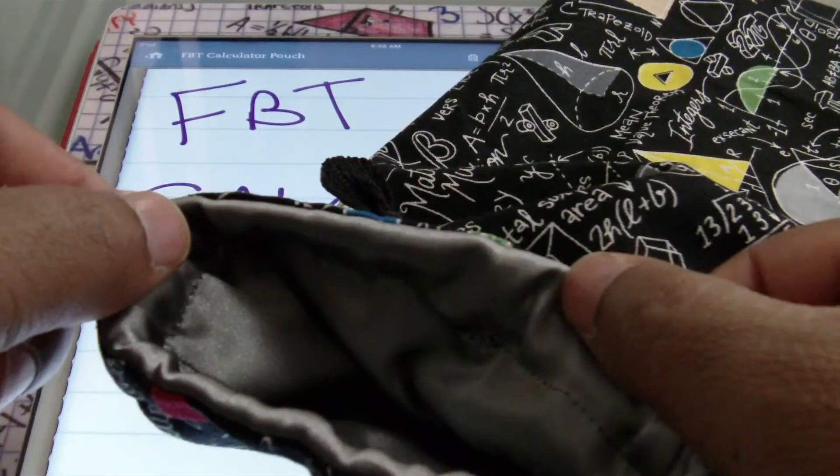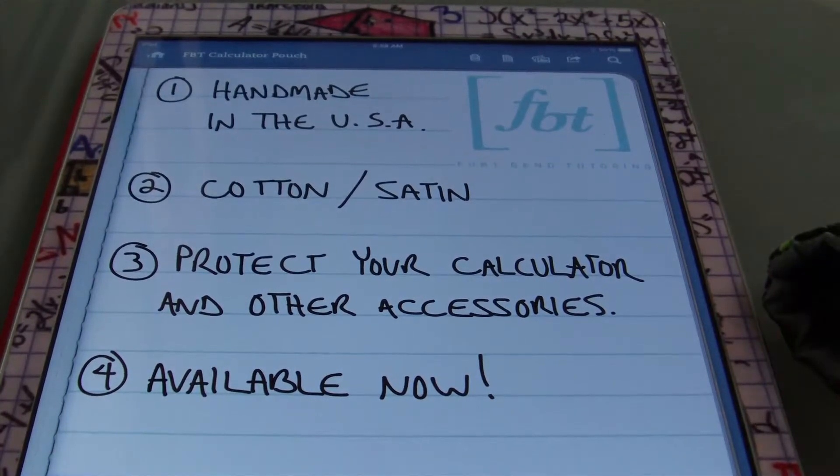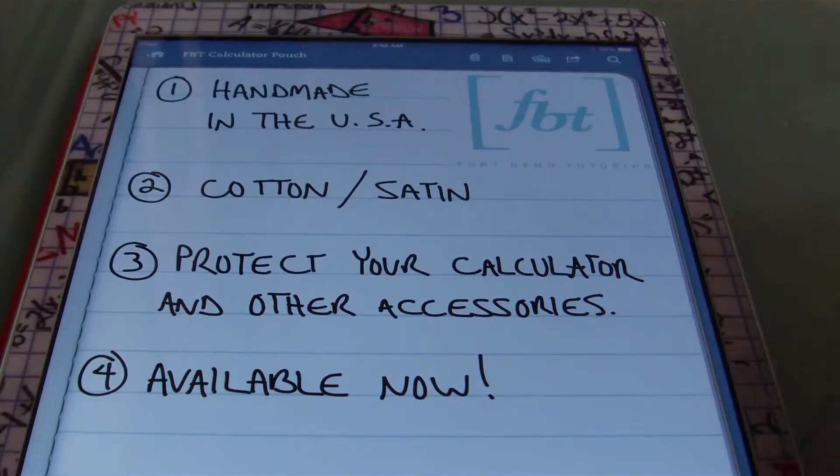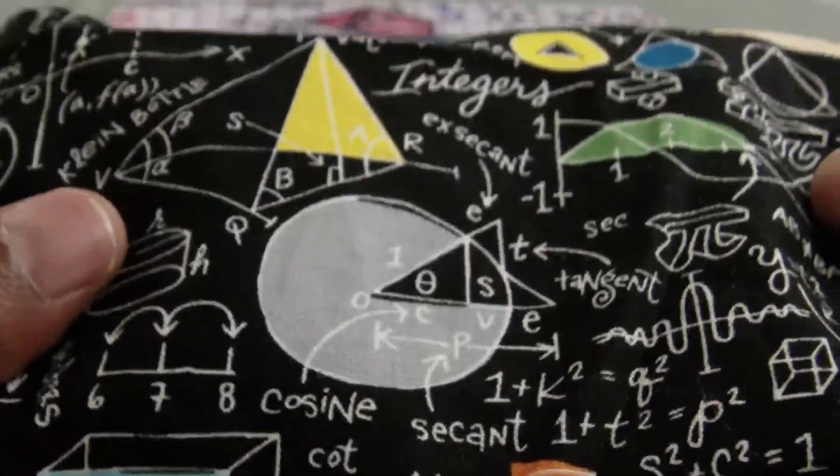It's 100% satin. Of course, it's not just restricted to math accessories and math utensils. You can also put in any type of device. Here I have my 3DS because I love to play Pokemon.